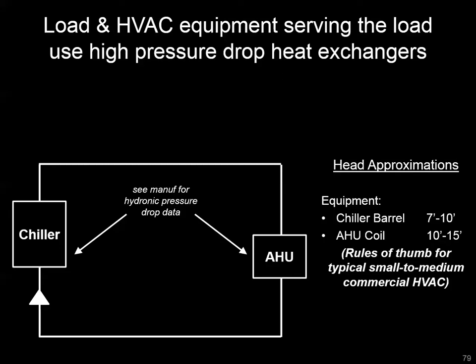The first thing we start with is those heat exchanger devices, and those are typically high pressure drop because of the surface area and the coils and passes included in some of these devices. You're trying to get as much time and space against these working fluids in this indirect heat exchange, and that is going to cause additional pressure drop relative to other components. There is published manufacturer data about what a typical air handling unit coil or chiller evaporator barrel pressure drops are going to be at different flows and conditions, but there are rules of thumb we can use for initial determination.